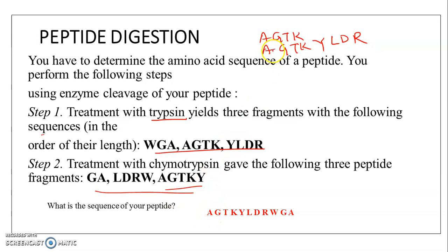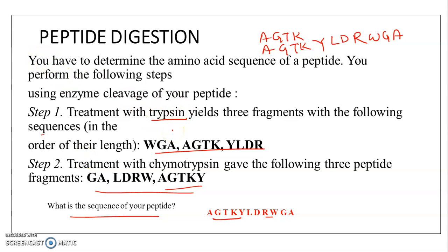So the full assembled sequence will be: A, G, T, K, Y, L, D, R, and W, G, A. These are the ways of finding the peptide sequence. You have to arrange the given data in the proper way, always from N-terminal to C-terminal.